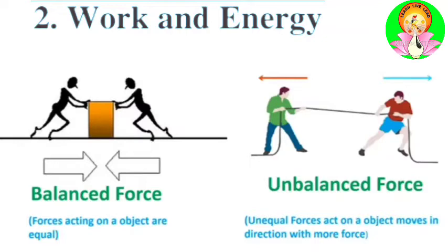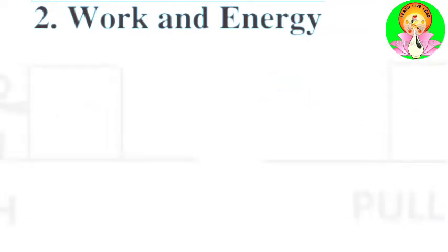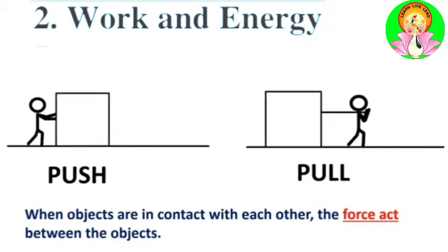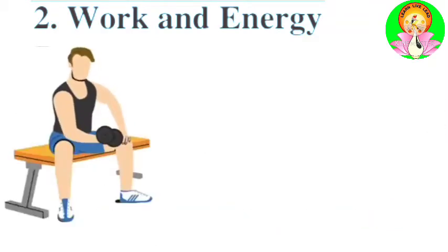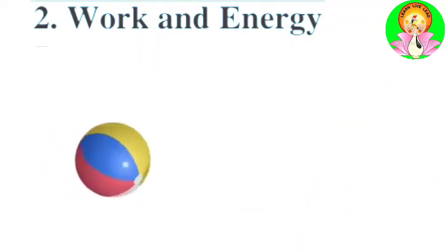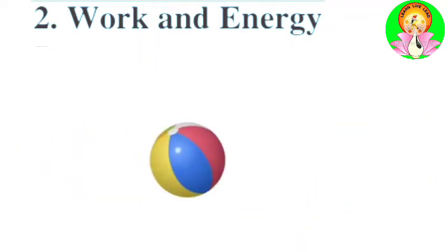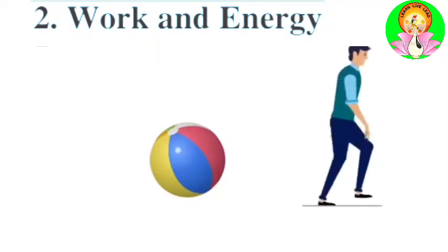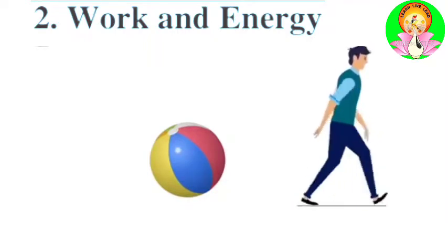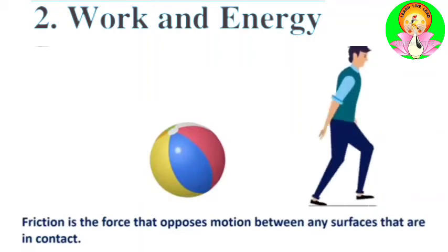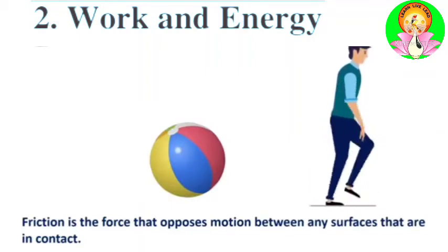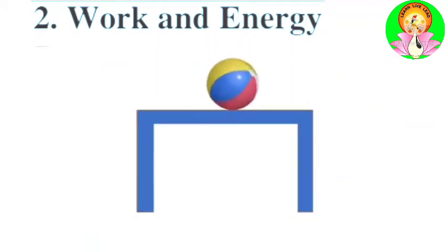Contact forces act between objects that are in contact with each other. Muscular force results from muscular activity. Friction is the force that opposes motion between a surface and the object in contact.